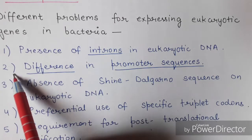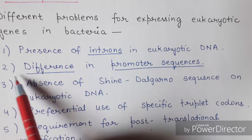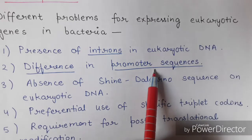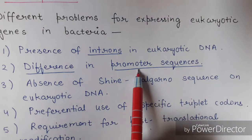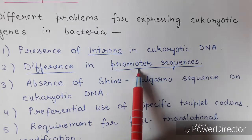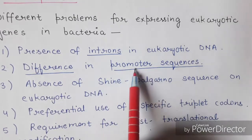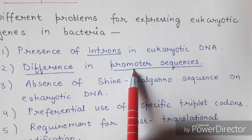The second problem is the difference in promoter sequences. We face a problem regarding promoter sequences because in the prokaryotic machinery, different kinds of promoter sequences are used in transcription and translation, whereas in the eukaryotic machinery, there are different types of promoter sequences. That is why we face difficulty expressing a eukaryotic gene into the prokaryotic cell.